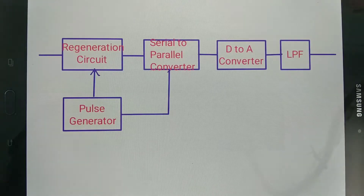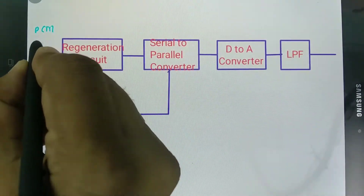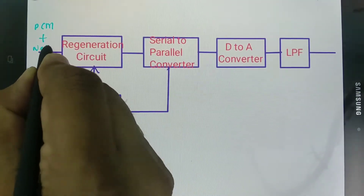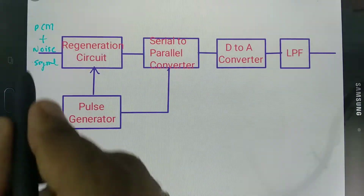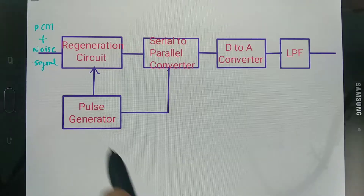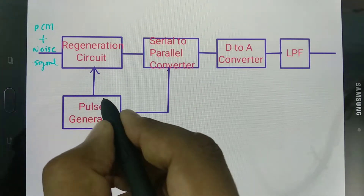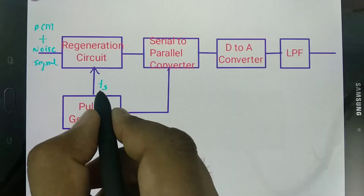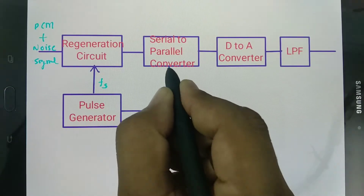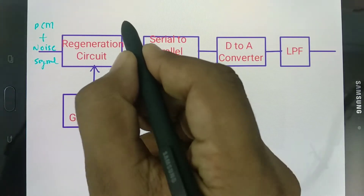Now let us look at the block diagram of the PCM receiver. When you receive the signal, you will have a PCM pulse-coded modulated signal plus noise. At the receiver side, there is PCM plus noise, and as explained, that noise can be removed using the regenerating circuit, which is synchronized with a pulse generator. The pulse generator generates pulses synchronized to the PCM signal at sampling frequency FS.